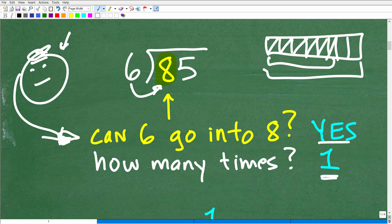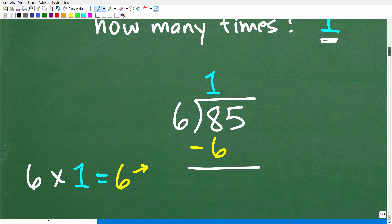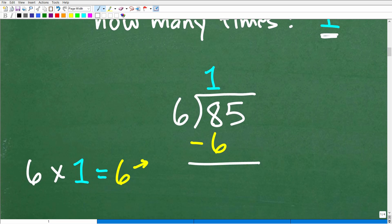So how many times does 6 go into 8? Well, we could just fit 1. So 6 goes into 8 one time, and we're going to put that right above the 8. That's step 1.